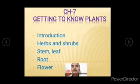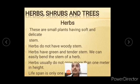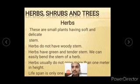Let us discuss herbs, shrubs, and trees. First, what are herbs? Herbs are small plants having soft and delicate stems. You have to understand the meaning of 'delicate' — delicate means something that can bend easily or break easily by your hand, with no extra machinery needed. So if you hold a plant and can break it or bend it easily, that is called delicate.